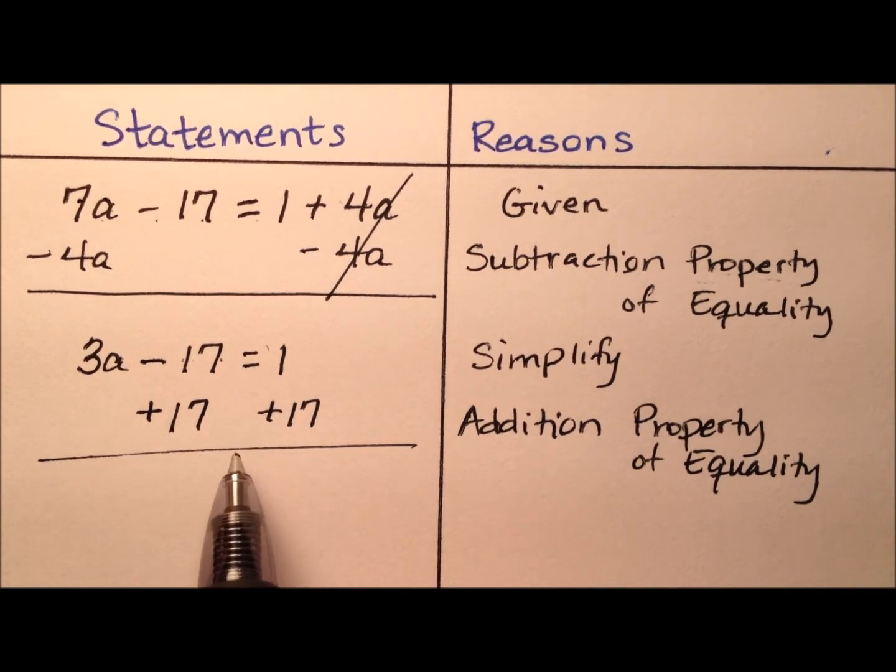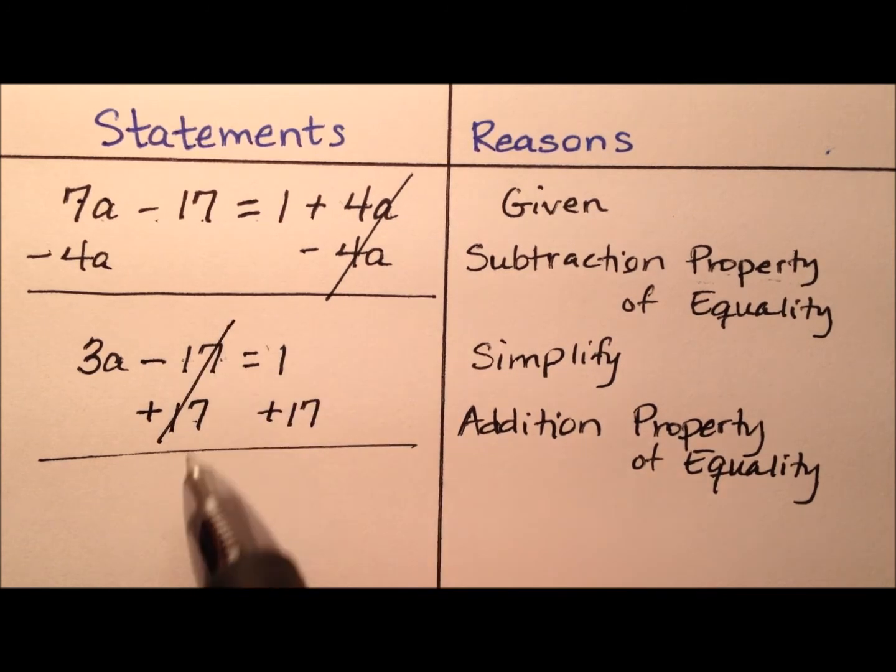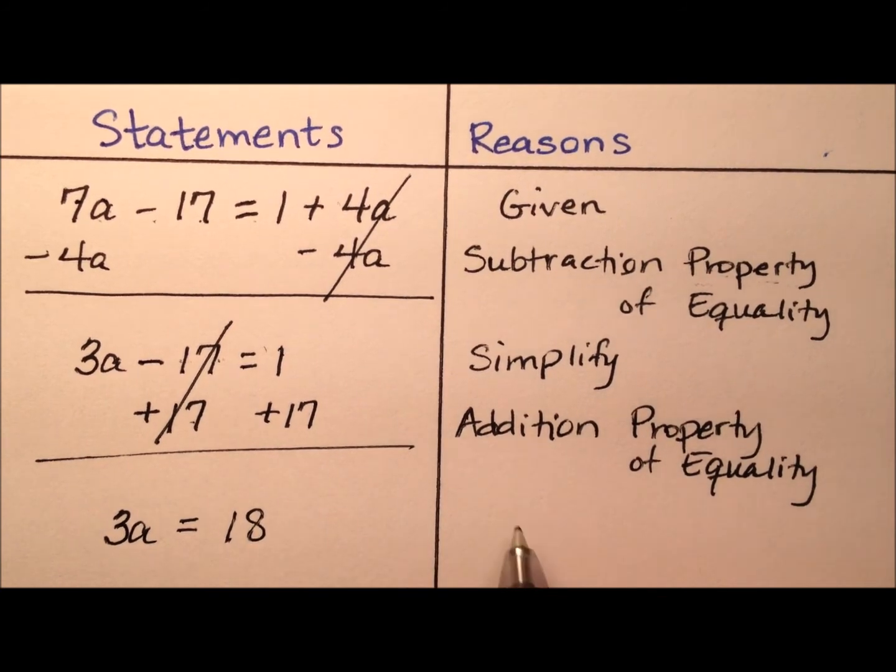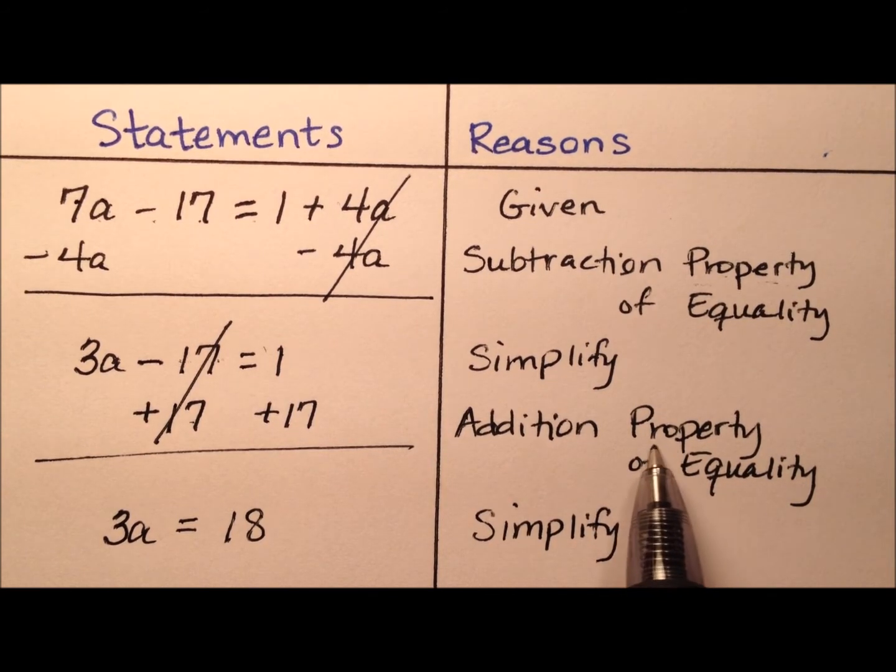Just like our subtraction property of equality, this just says if I add something to one side of the equation, I need to add it to the other side just to keep everything nice and equal. What will this look like numerically? The negative 17 and the positive 17 will cancel each other out. So I'll have just this 3a over here on the left, and on the right, I'll do 1 plus 17, which is 18. What's the justification here? Well once again, it's going to be simplify. Every time you use a property of equality, you're going to use typically a simplify afterwards.